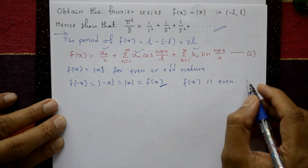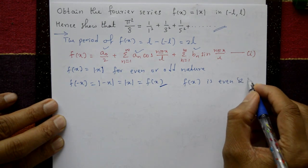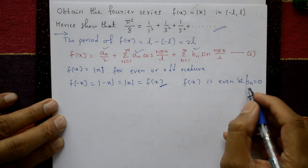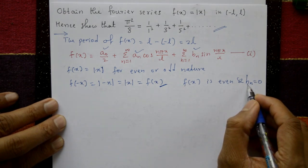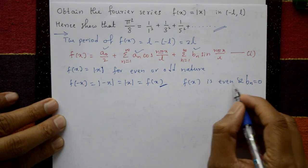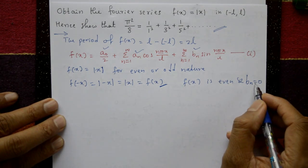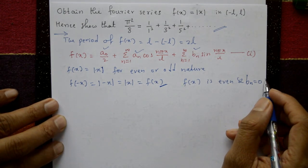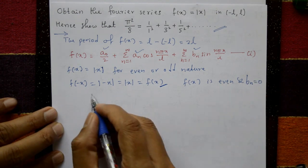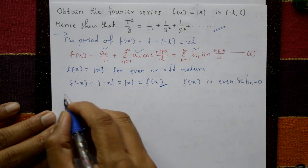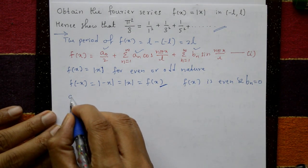Since f(x) is an even function, bₙ is zero — we don't need to calculate bₙ. We only need a₀ and aₙ.